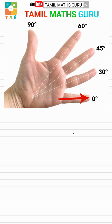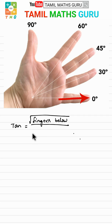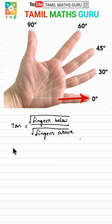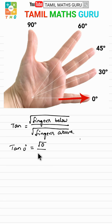Now for tangent: tan is equal to the square root of fingers below divided by the square root of fingers above. For tan 0 degree, fingers below is 0, so square root of 0 is 0. Fingers above is 4, so square root of 4 is 2. Therefore tan 0 equals 0 by 2, which is 0.